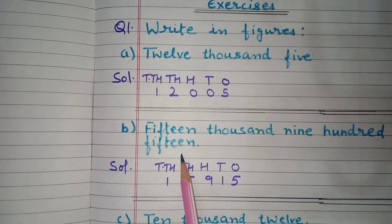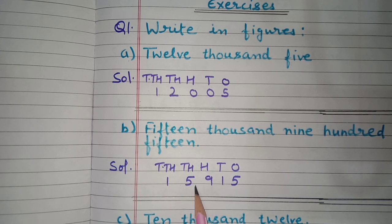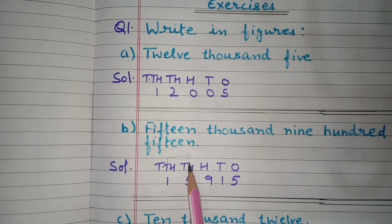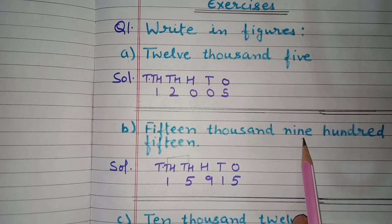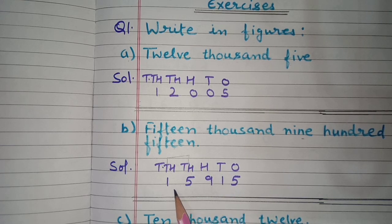Next is part B: fifteen thousand nine hundred fifteen. Again we write the places — ones, tens, hundreds, thousands, ten thousands. Fifteen thousands: one under ten thousands and five under thousands. Nine hundred: nine under hundreds. Then fifteen: one at tens place and five at ones place. So it is 15,915 in figures.